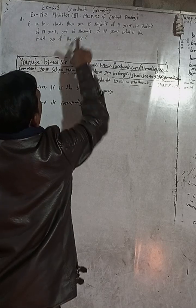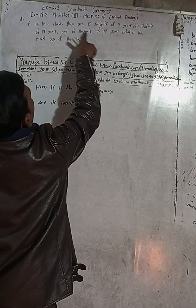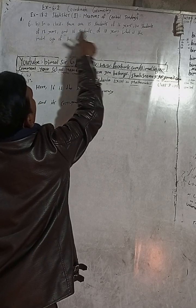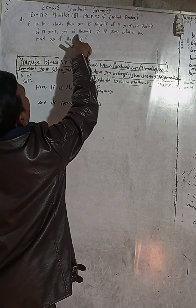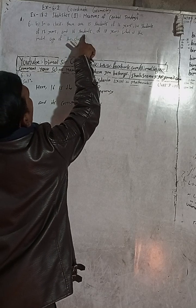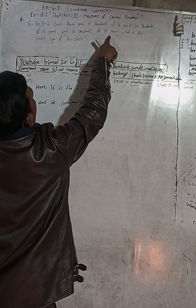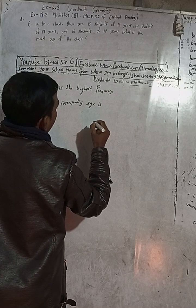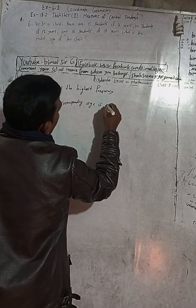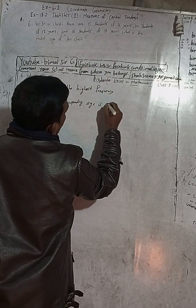The highest frequency is 16, which means 16 students of 18 years. So 16 is the frequency — the number of students — and the corresponding age is 18 years.